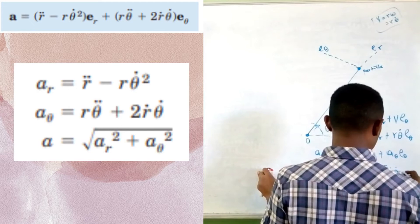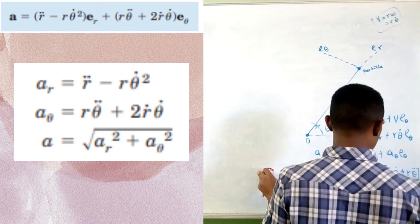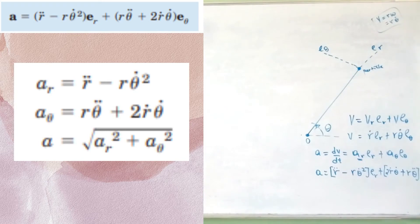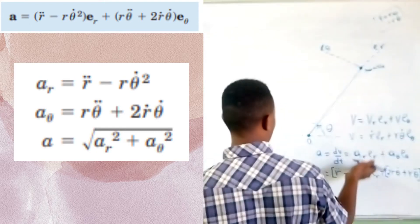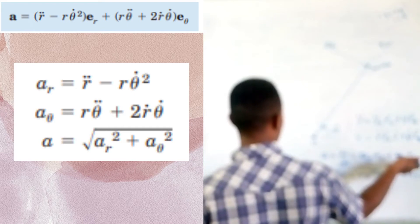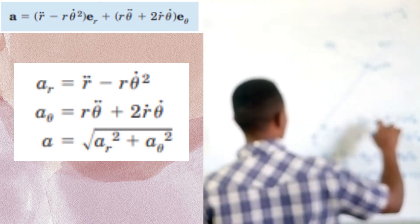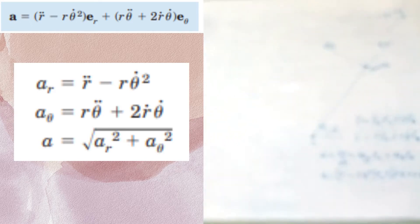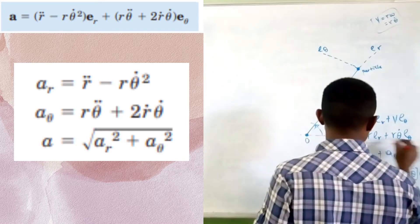We have r-dot, theta-dot, plus R times theta-dot along the radial direction. The total acceleration is the sum of the acceleration components along the radial direction and the angular direction.